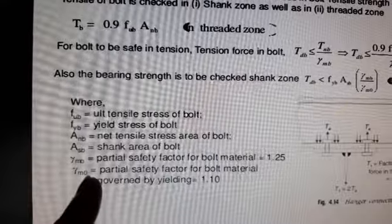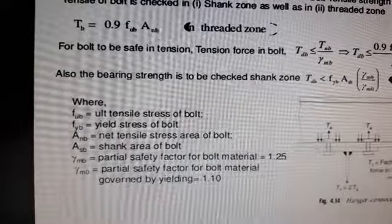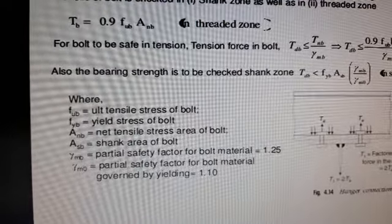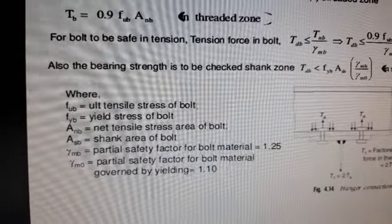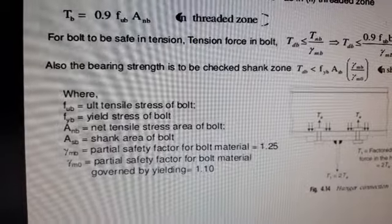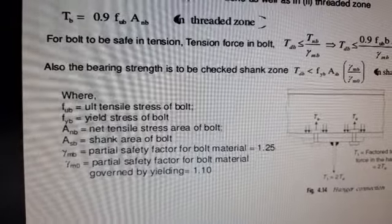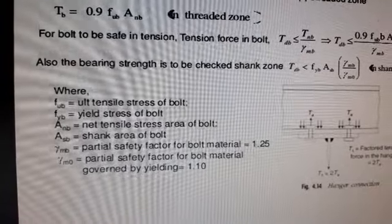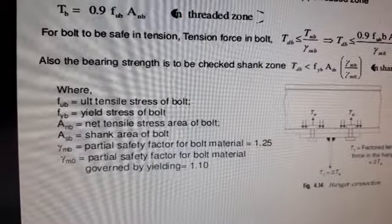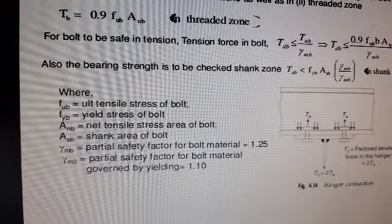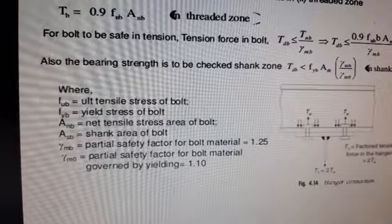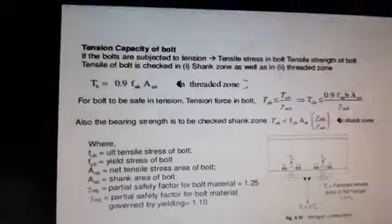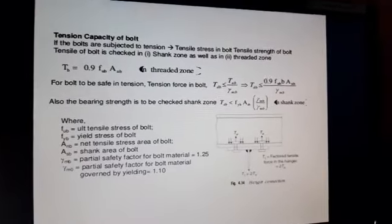The terms are: fub = ultimate tensile strength of bolt, fyb = yielding strength of bolt, Anb = net tensile stress area of bolt, Asb = shank area of bolt, γmb = partial factor of safety for bolt material = 1.25 always, and γm0 = partial safety factor for bolt material governed by yield = 1.1.